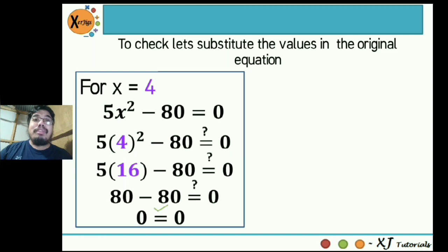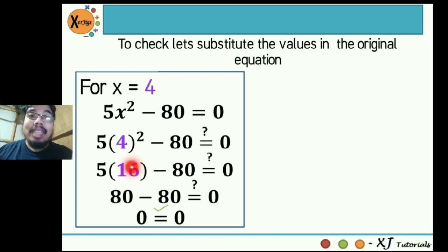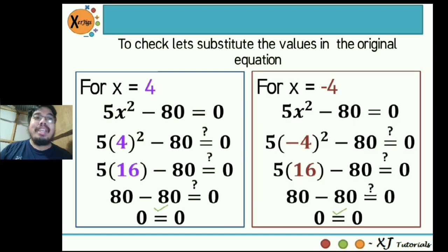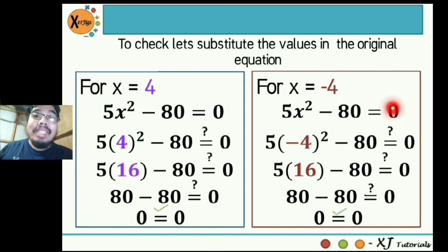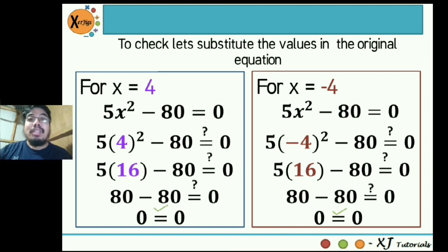Let's do the checking. We substitute into the original equation 5x squared minus 80 is equal to 0. When x is positive 4: the square of positive 4 is 16; the product of 5 and 16 is 80; 80 minus 80 is equal to 0. So positive 4 is one of the solutions. Next, for negative 4: we substitute into the original equation — negative 4 times negative 4 is positive 16; 16 times 5 is 80; 80 minus 80 is 0. So when x equals negative 4, it satisfies the original equation. Therefore there are two real solutions.